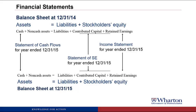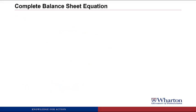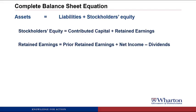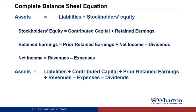We also have the statement of stockholders' equity, which explains changes in stockholders' equity between two balance sheets. Stockholders' equity has two components: contributed capital — money raised from shareholders — and retained earnings, which is created by operating the business. Retained earnings equals prior retained earnings plus net income minus dividends paid. Net income is revenues minus expenses. Putting it all together, the complete balance sheet equation is: assets equal liabilities plus contributed capital plus prior retained earnings plus revenues minus expenses minus dividends.